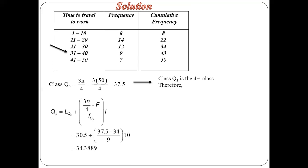From there, we now substitute our respective values. We have that 34 will be our capital F, that's the cumulative frequency before the upper quartile class. The upper quartile class is 31 to 40, so the cumulative frequency before will be 34. We have the frequency of the upper class, which is 9. From there, we have 34.3889.